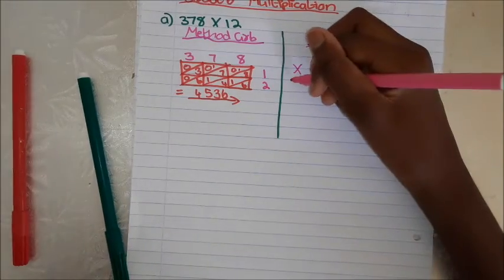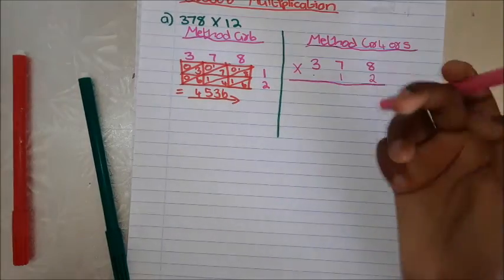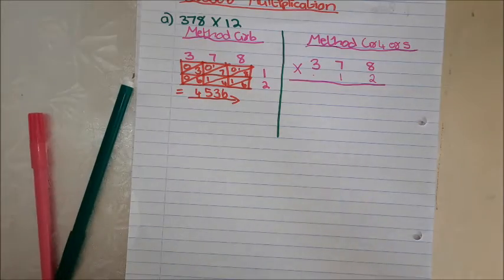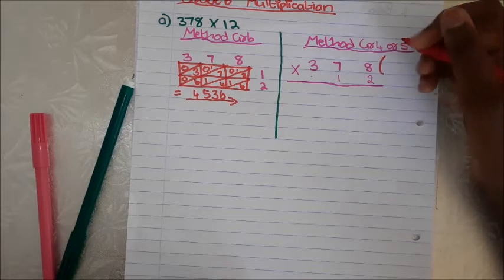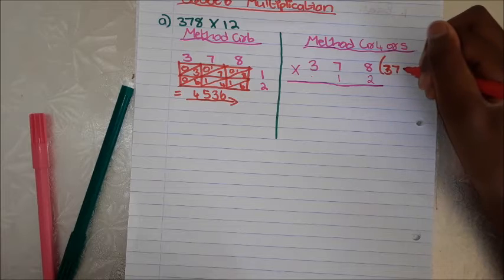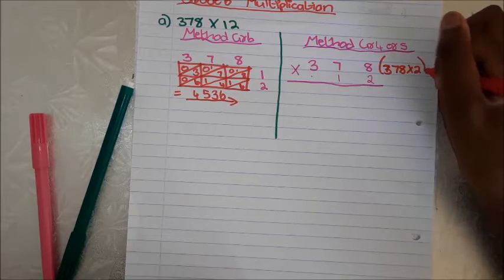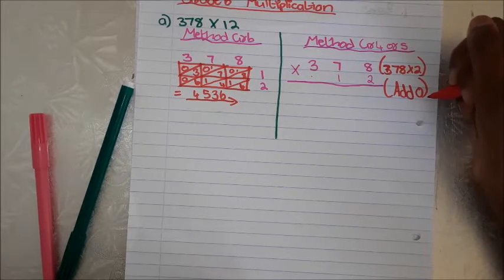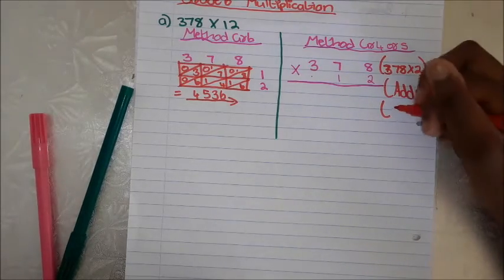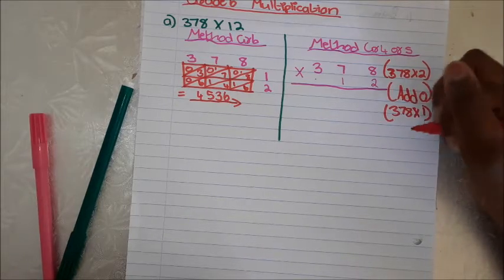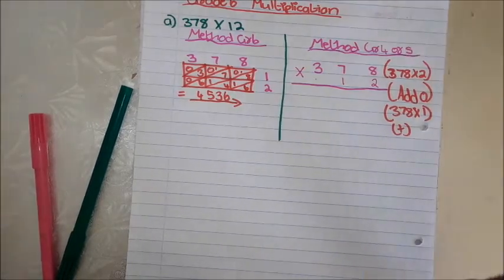Sorry for not using a ruler. Before we calculate, we do something very important — I'll write it in red. We have 3, 7, 8 times 2. Then we add the golden zero — it's important. Then we write 3, 7, 8 times 1, then put the plus. Now we can start calculating.